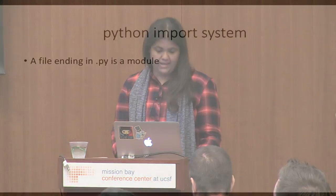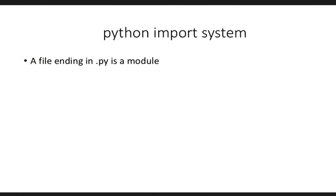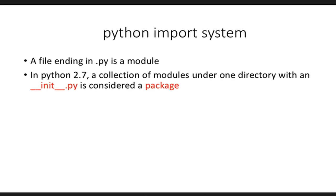Before understanding why deployments with Python are hard, let's understand the Python import system. Any file ending in .py is called a module. In Python 2.7, a collection of modules under one directory which has an __init__ file is considered a package. What the word 'package' means is that a package is importable — it can be imported by other packages in the same location. The Python import system is completely byzantine, with several other links you can follow to understand why Python imports have so many gotchas.